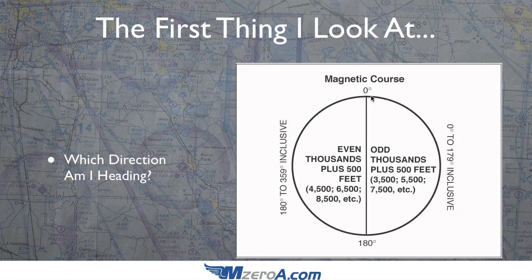A very common question I get asked is, well, what if I'm flying right on 360 or right on 180? You can see how it's inclusive to each heading through this picture. A great way to remember this — some people like to say odd people live in the east. Now, as someone who lives in the east, I take offense to that. But you know what? It helps us remember that.